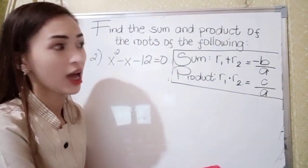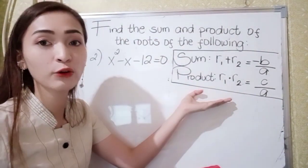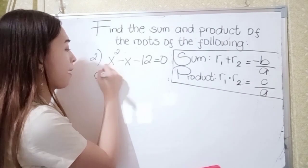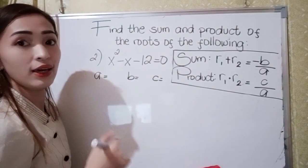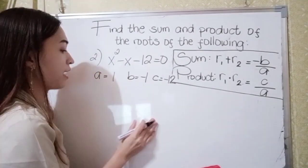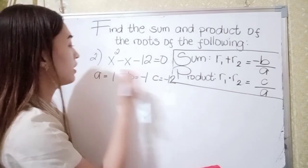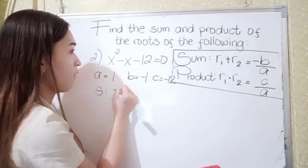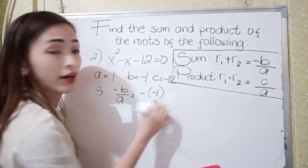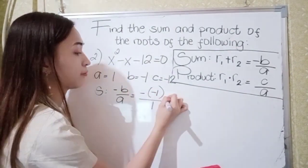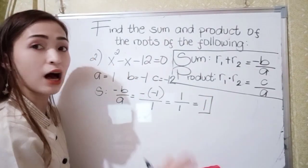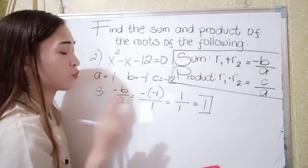We will not use factoring anymore, since you already know how to solve it. Using the formula for x squared minus x minus 12 equals 0: a is 1, b is negative 1, and c is negative 12. For the sum, we have negative b over a — negative times negative 1 is positive 1, over 1, so the sum is 1.